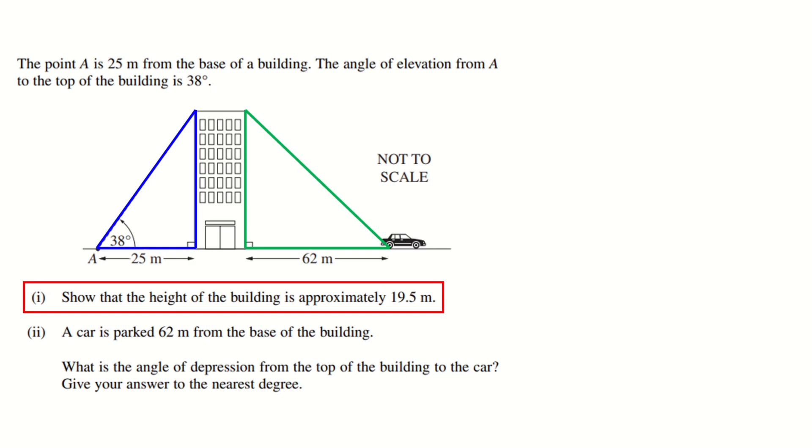Well, both triangles have a given length - 25 on the left, 62 on the right - but only the blue triangle has an angle that's given to us as well, and so only that one's going to be useful at this stage. We're going to use this blue triangle to work out that height we're looking for.